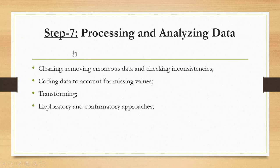For the seventh step, we have processing and analyzing data. Once we collect data, we should process it and analyze it. How can we process it? By cleaning it, by removing erroneous data or checking inconsistencies. Coding data to account for missing values by assigning—for example, for yes/no questions, zero and one, or for five-point Likert scale, one to five ranging from strongly disagree to strongly agree, and to account for missing values by coding them as nine, etc. Transforming data—we can do reverse coding if we want to check for consistency of scale.